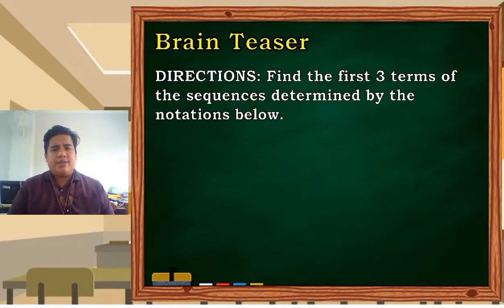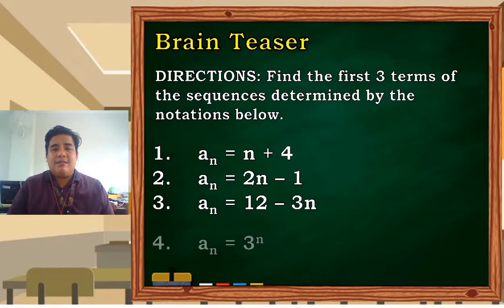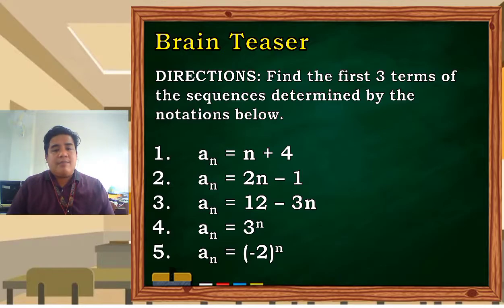Next: find the first 3 terms of the sequences determined by the notations below, like our notation earlier, 3n plus 1. Let us try to find the first 3 terms of the sequences determined by the notations below. a sub n equals n plus 4, a sub n equals 2n minus 1, a sub n equals 12 minus 3n, a sub n equals 3 raised to the n, and a sub n equals negative 2 raised to the n. So what we're going to do, class, is we will just substitute.